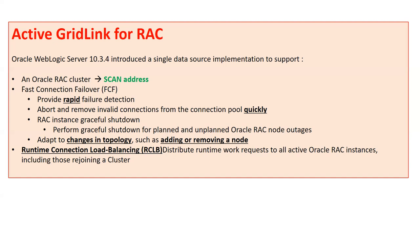Runtime connection load balancing distributes runtime work requests to all active RAC instances, including those recently added to the cluster. Active Grid Link is smart enough to check the health status of all instances in the backend and, based on responses, directs requests to the best available node. Unlike multi-data source's round-robin, even if one node is slow and another is idle, Active Grid Link sends connections to the best performing instance.